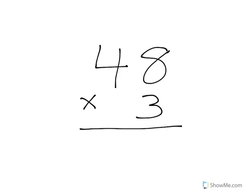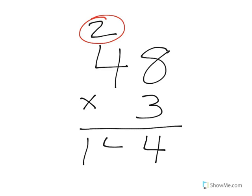Let's look at another one. We have 48 times 3 — three groups with 48 in each. Start in the ones place: 3 times 8 is 24, so put down the 4 and regroup. Carry that 2 over. 3 times 4 is 12, and 12 plus that 2 up here gives us 14. Our product is 144.